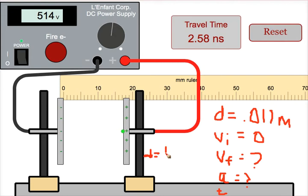We have everything in here except for the acceleration, so we can solve for the acceleration of the electron. Once we have the acceleration of the electron, we can find the speed by doing velocity final equals velocity initial, which is zero, plus a times t.